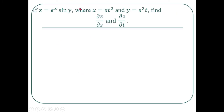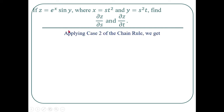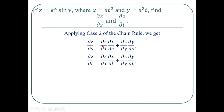Example: If z = eˣ sin(y), where x = st² and y = s²t, find ∂z/∂s and ∂z/∂t. Here z is a differentiable function of x and y, where x and y are differentiable functions of s and t. So by case two of the chain rule: ∂z/∂s = (∂z/∂x)(∂x/∂s) + (∂z/∂y)(∂y/∂s), and ∂z/∂t = (∂z/∂x)(∂x/∂t) + (∂z/∂y)(∂y/∂t).